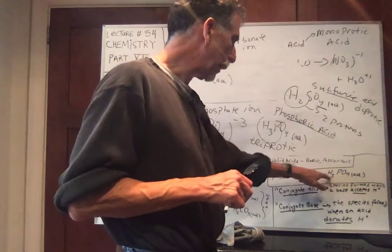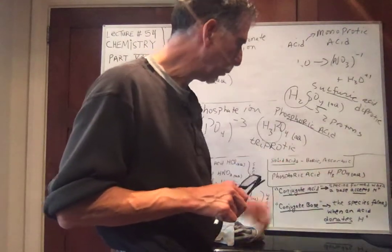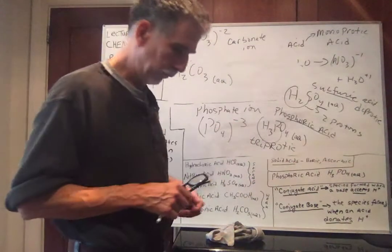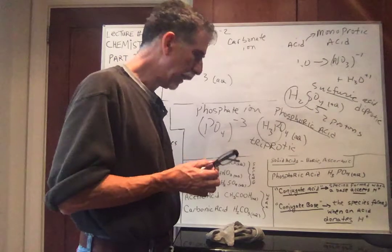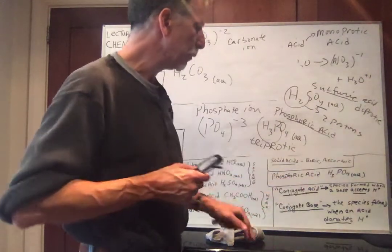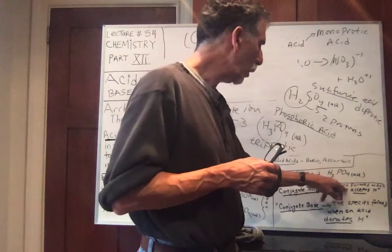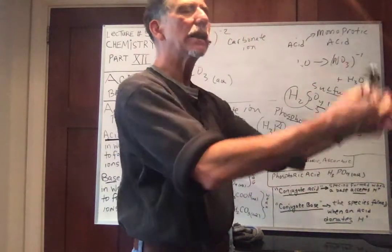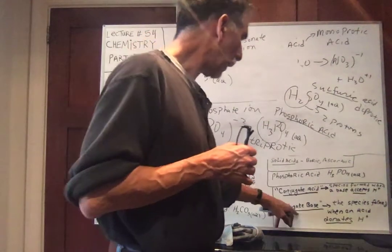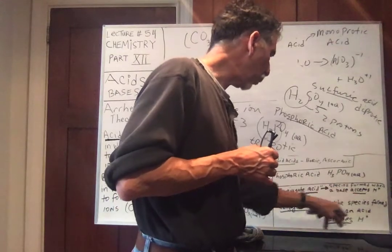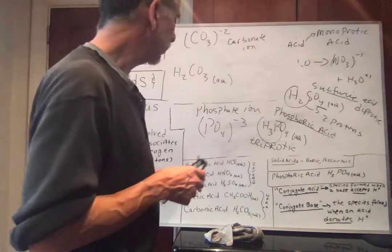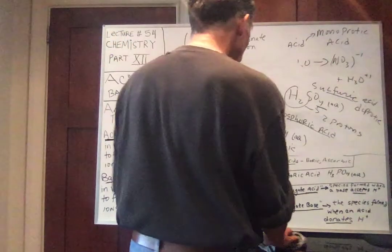Again, there's phosphoric acid. We said it's triprotic. Wants to give up those three protons to form a phosphate ion. And quickly, again, without going into details, and we're not doing complicated reactions, a conjugate acid, if you see that phrase, refers to a species formed when a base accepts a proton. And a conjugate base, the species formed when an acid donates a proton.